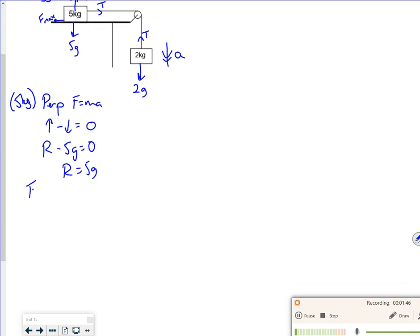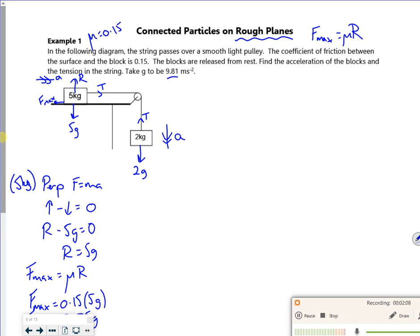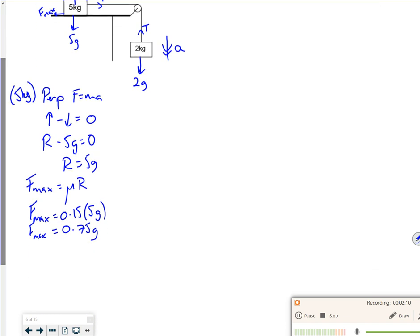So I can use this for the friction now, so Fmax is μR, so Fmax is 0.15 times 5g. The pack says that that's 0.75g, which we'll keep it exact for now, because it says exact. And g is 9.81 as well. So I've got my Fmax now.